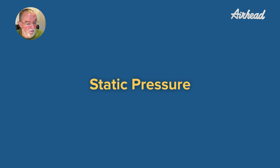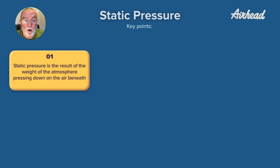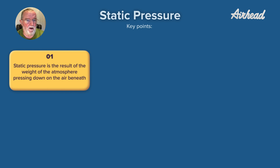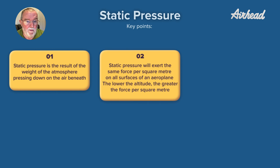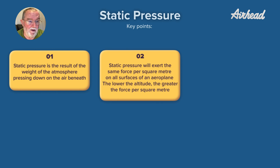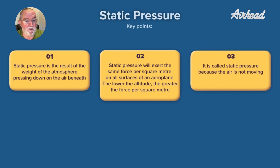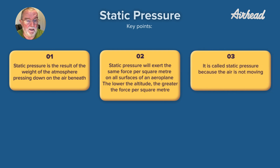Atmospheric pressure comes in two forms. Static pressure is around us all the time — it acts on everything: above my hand, below my hand, everywhere. It's about 14 and a half pounds per square inch at sea level. Static pressure is the atmosphere pressing down on the column of air beneath it. The lower the altitude, the greater the force per square metre. It's called static pressure because it has nothing to do with movement — it's just the weight of the air above us.